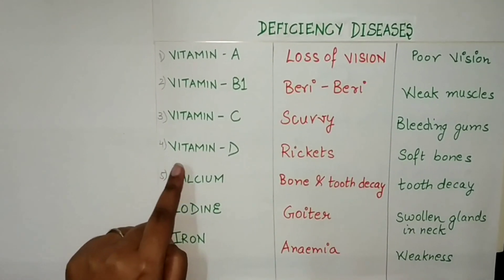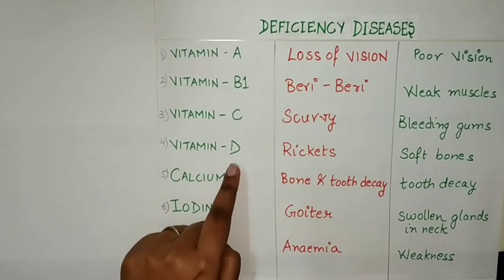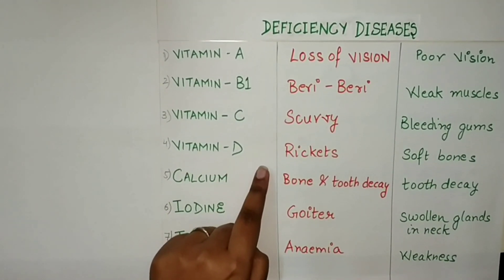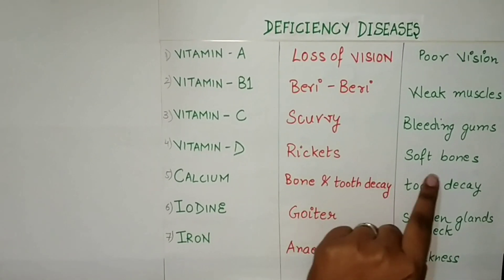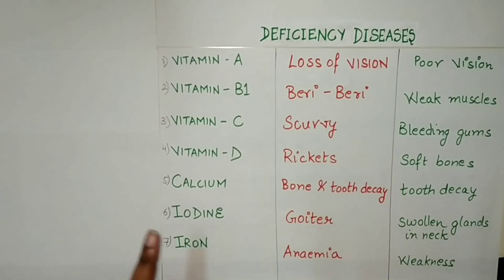Lack of vitamin D would cause rickets. The symptom is soft bones.